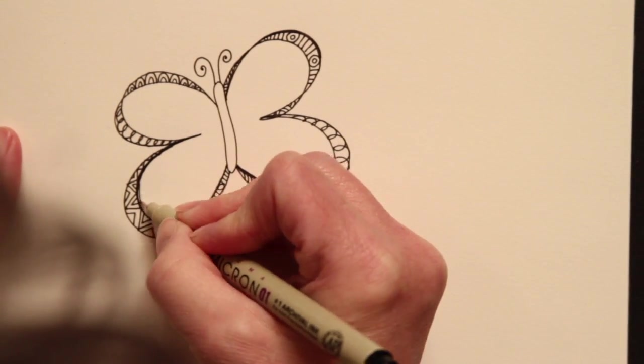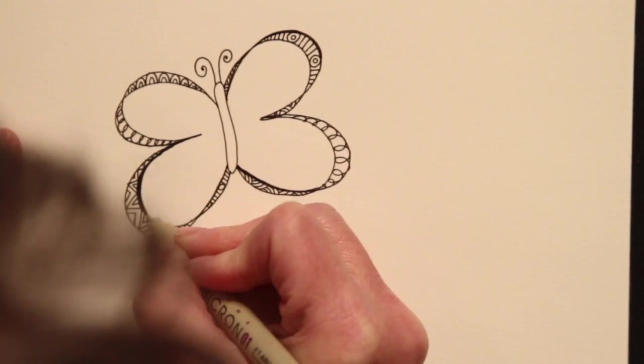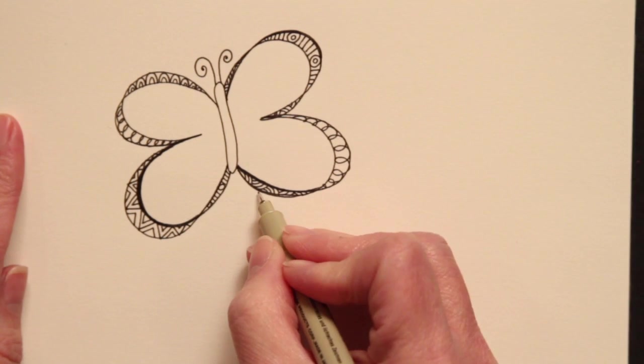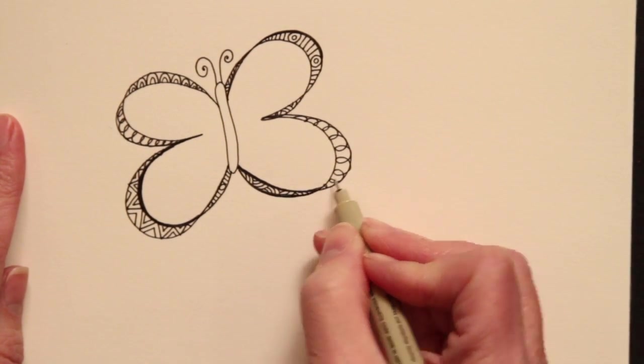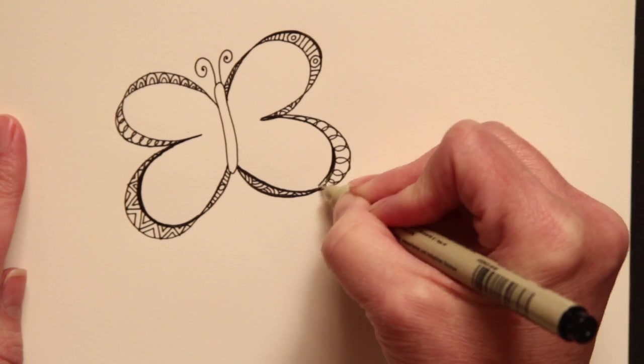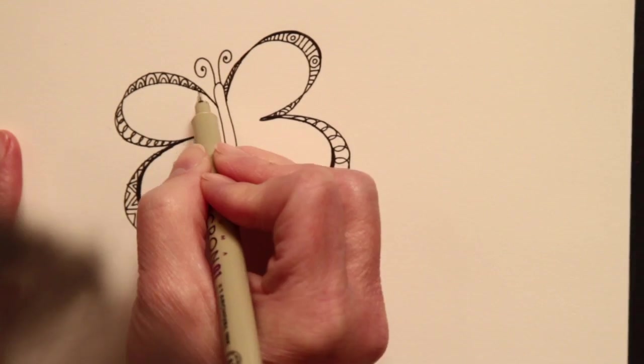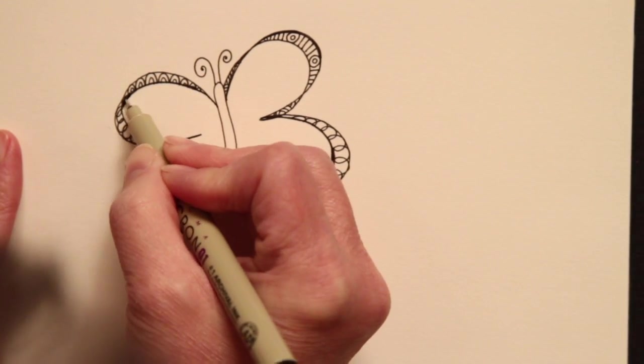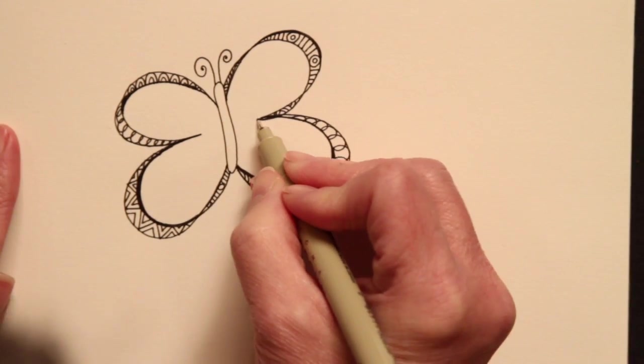I'm going to do the same thing. I'm going to come in and just add weight. And by adding weight, I can clean up my butterfly, hide any line flaws, and make it look more interesting because I have some heavy lines that contrast with my lighter weight lines.